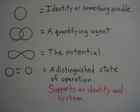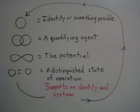Information for the state of operation will support an identity and system. The identity and system is an expressed state of the potential. This is the same as saying it is in a position of existence, which is the equivalent of the identity and system operating on its behalf.